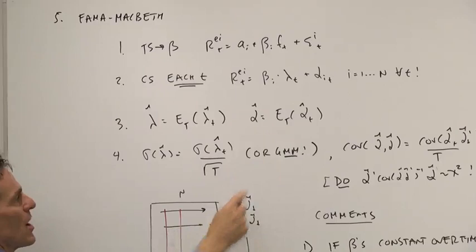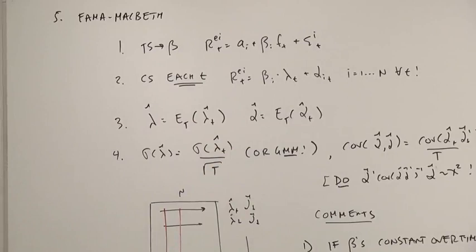You know how to use GMM, an S matrix, to compute standard errors that allow for auto-correlation or heteroscedasticity, if you feel like it.